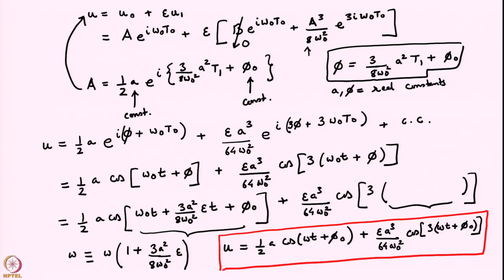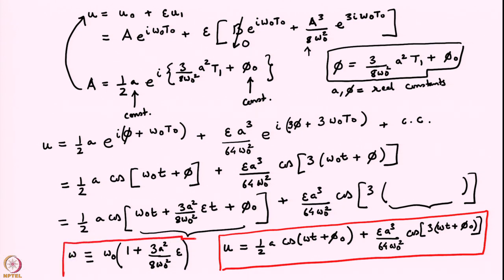This is the solution to the Duffing oscillator up to order epsilon. The first nonlinear correction has been applied — you can see that a harmonic of the primary frequency has appeared. The linearized solution would just oscillate at omega_0. This correction to the dispersion or frequency relation shows that the frequency of the nonlinear oscillator depends on epsilon, so if you change epsilon, the frequency will be slightly different from that of the linear oscillator. We had found a similar result earlier for the simple pendulum, where the nonlinearity had a cubic term with a minus sign.